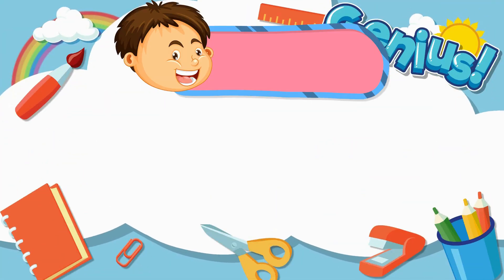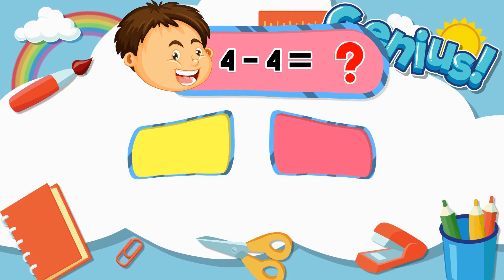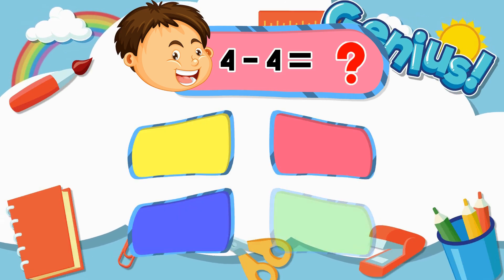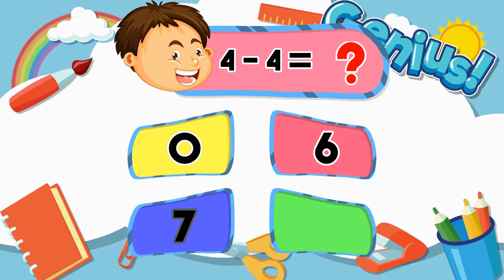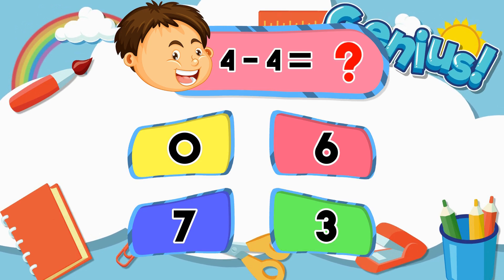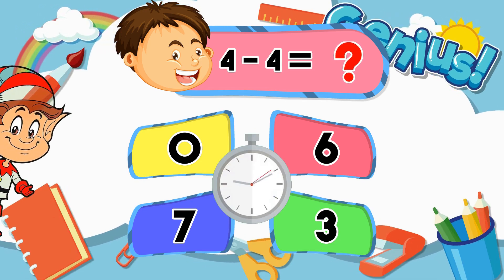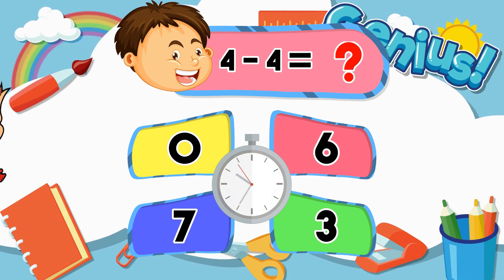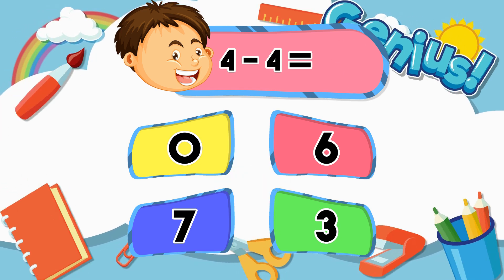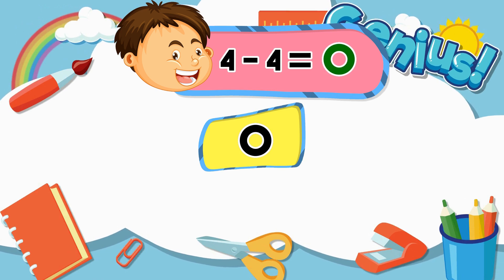What is 4 minus 4? 0, 6, 7, 3. The correct answer is 0.